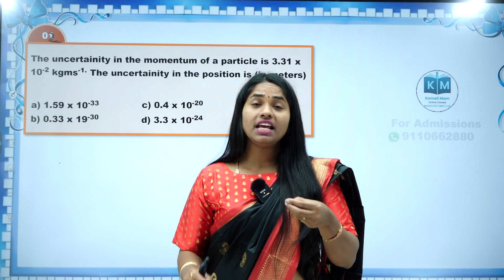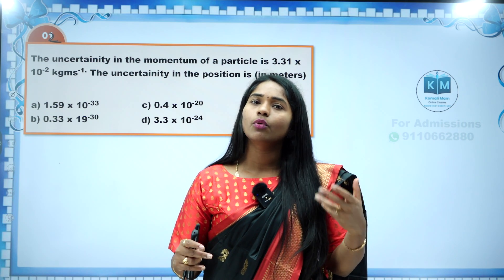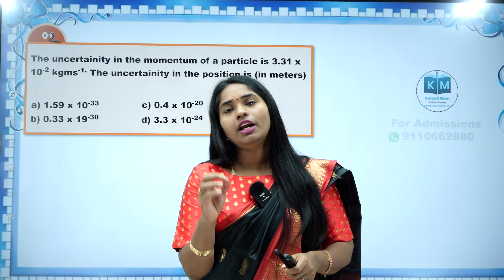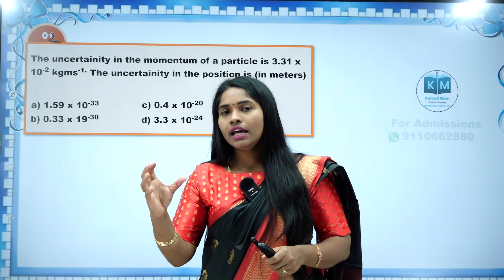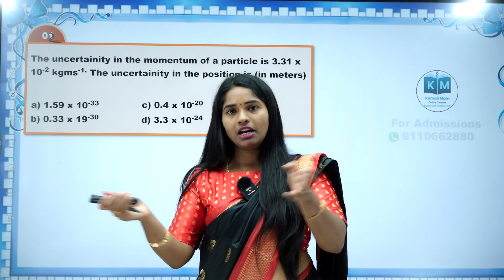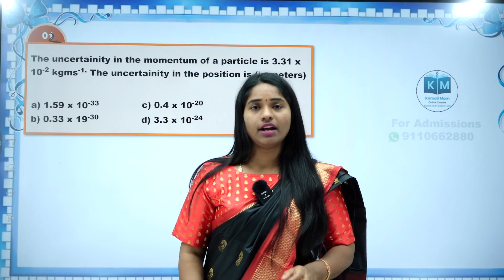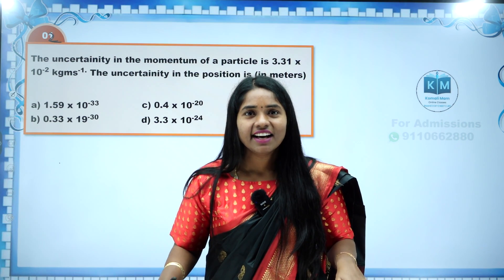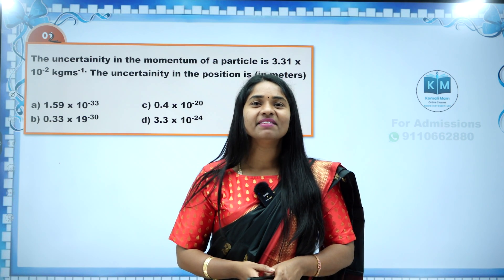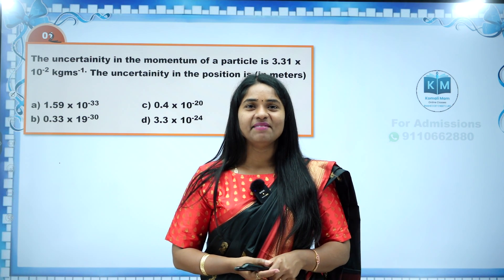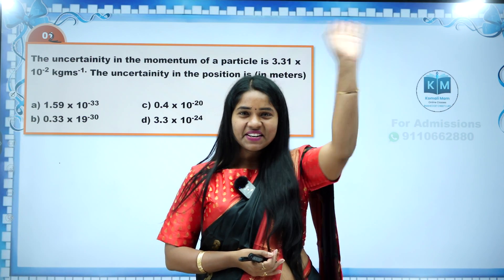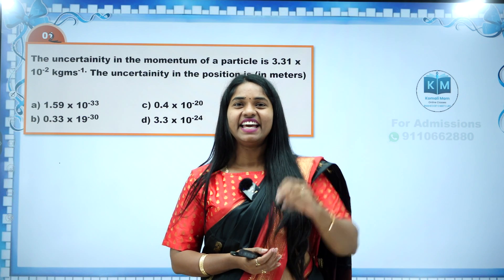And if suppose in any accuracy-related question — if velocity is given as, say, 3 into 10 to the power of 5 meter per second and 2 percent is the accuracy — just multiply those two values and you will get your answer. That's it! See you in the next video with the solution. My name is Komali, I am your chemistry mentor. Thank you so much for watching this video. Bye, take care, have a nice day!